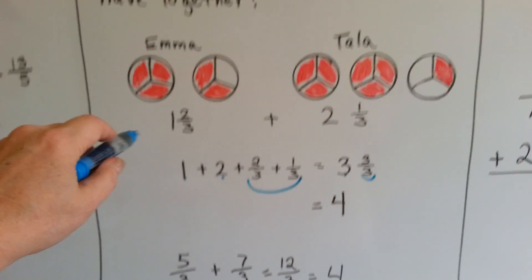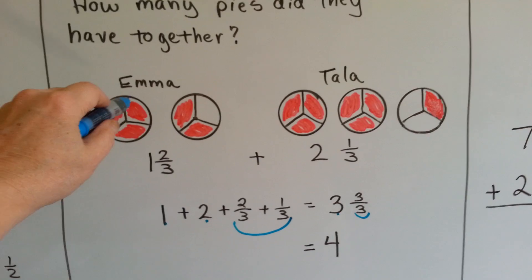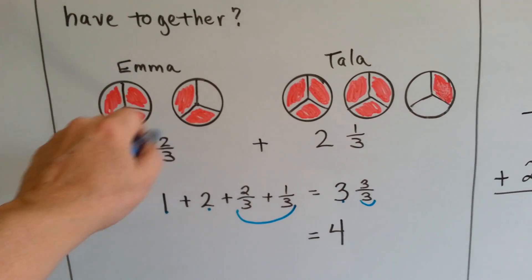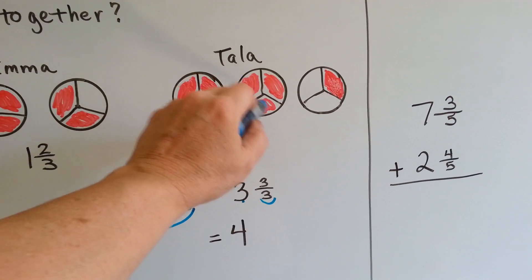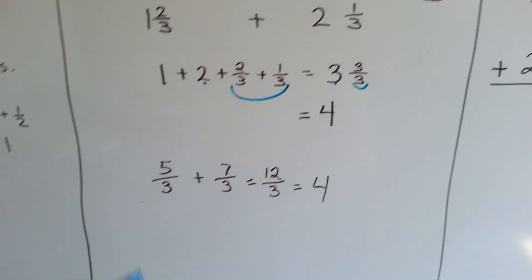It would also be like saying Emma has one, two, three, four, five thirds and Tala has three, four, five, six, seven thirds. Emma has 5/3 and Tala has 7/3. Can you see that?